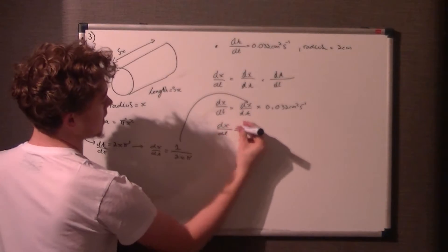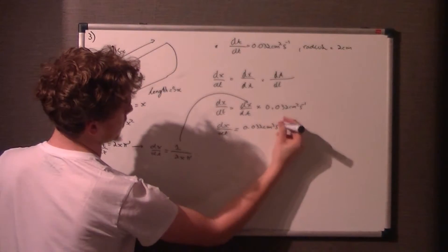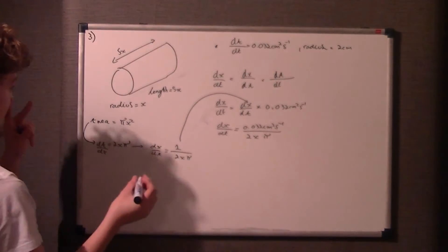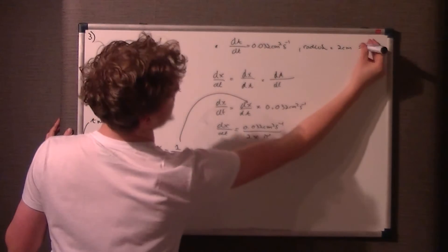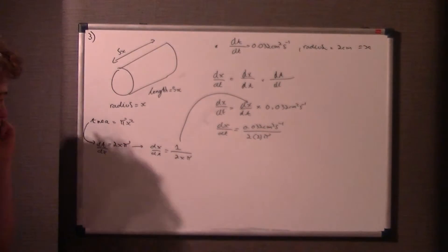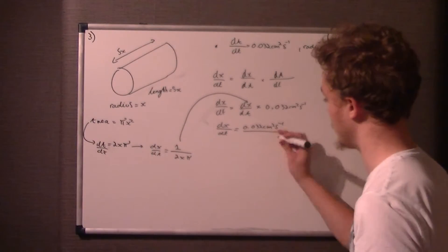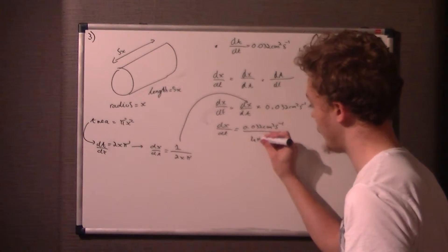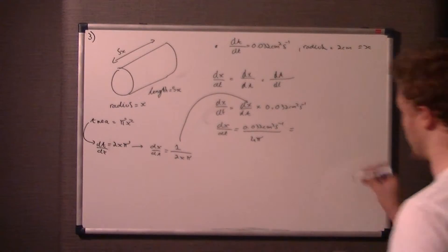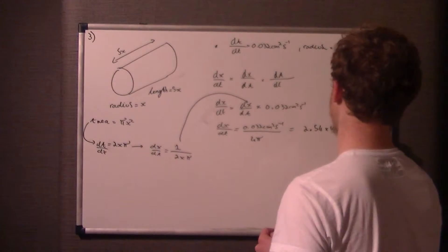So therefore, dx/dt is equal to 0.032 cm² per second over 2xπ. Now we know x is the radius. So you can put this 2 cm is also equal to x. So you just sub in x to be 2. So it's 0.032 over 2 times 2 times π, or in other words, 0.032 over 4π. You get an answer for that, which should be—I've got it in standard form. But as I said, you can work on the mark scheme online if you don't get this.